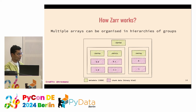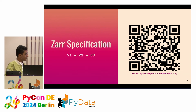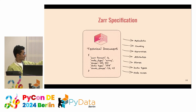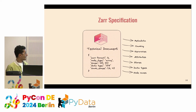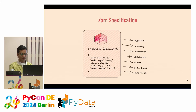There's a neat graphic showing how we evolved from version two to version three. Zarr is based on a specification — a technical document that lays out how your metadata should look, what your chunking strategy is, how hierarchies are organized, what the attributes are, and what data types you have. This specification is available online and contains version one, two, and three. The Zarr software is written based on this specification.